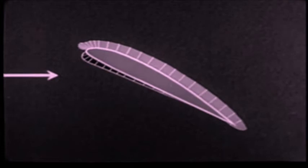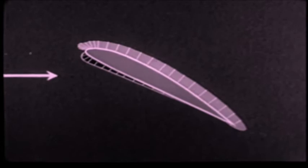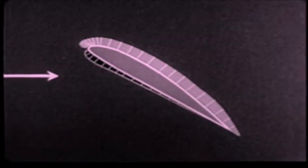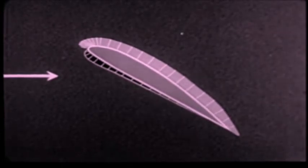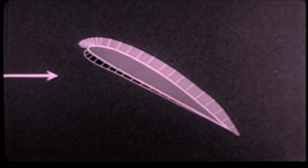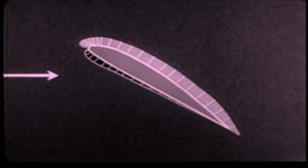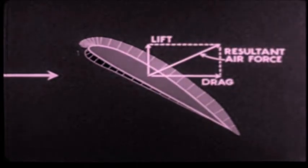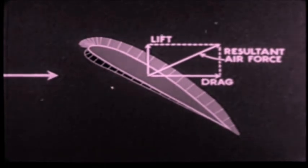Another increase in the angle of attack merely results in increased value, distribution remaining almost the same as before. At this final angle, pressures have reached still greater values without any appreciable change in distribution. It might appear from this diagram that at this angle of attack, the uniform pressure distribution over the upper wing surface would be desirable. However, above the stalling angle, the resultant air force acts in such a direction that the drag is its large component.